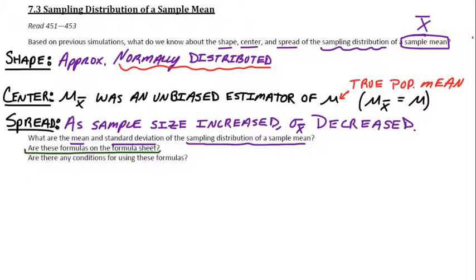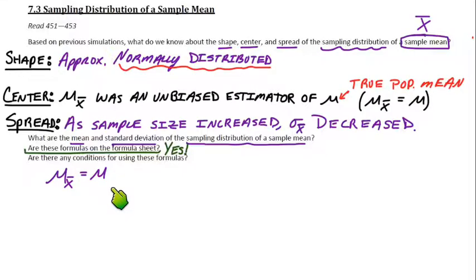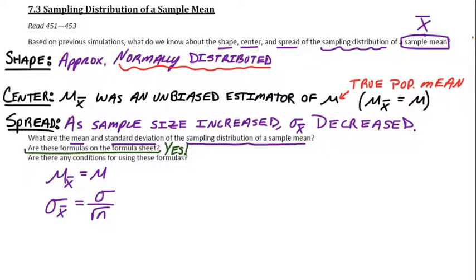So what are the mean and standard deviation formulas for the sampling distribution of a sample mean? And maybe the bigger question: are they on the formula sheet? The answer is yes — they are on the AP exam formula sheet. The mean of this distribution is equal to mu, the true population mean. The standard deviation of x-bar — the standard deviation of the sampling distribution — is the true population standard deviation divided by the square root of n, the sample size.